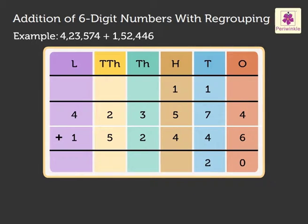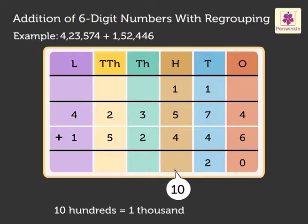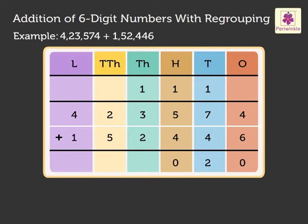Further, we add 1, 5 and 4 to get 10. Regroup the 10 hundreds to 1 thousand and 0 hundreds. Carry the 1 thousand to the thousands column and write 0 in the hundreds column.